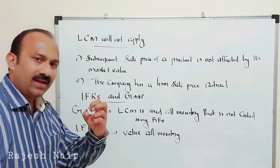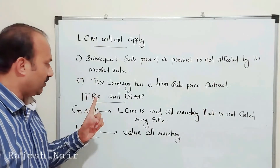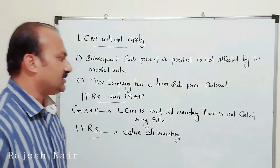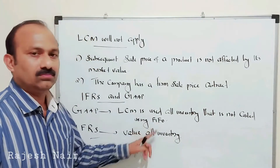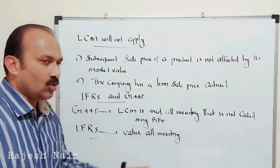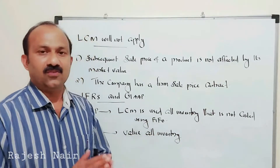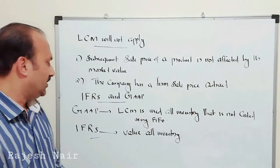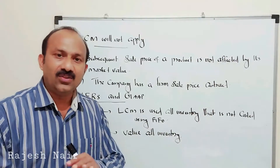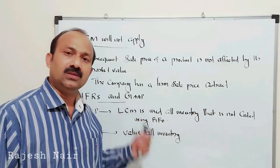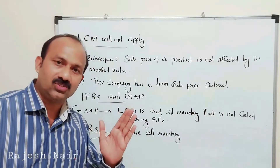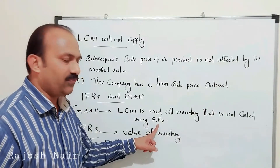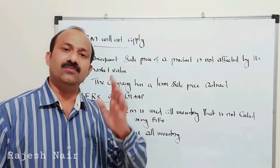We need to compare the points of view from IFRS and from GAAP. Under GAAP, LCM can be used for all inventory methods except FIFO — LCM is used for all inventories not costed using the FIFO method. If an organization is using FIFO, the material that comes in first is issued for production first, and the LCM method is not applied there. But IFRS says to value all inventories using the LCM method. So GAAP applies LCM to all methods except FIFO, while IFRS applies LCM to all inventories.